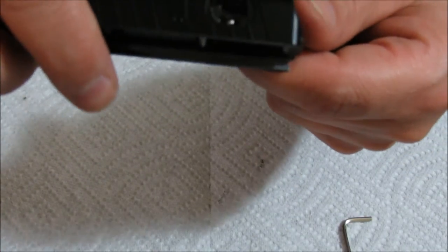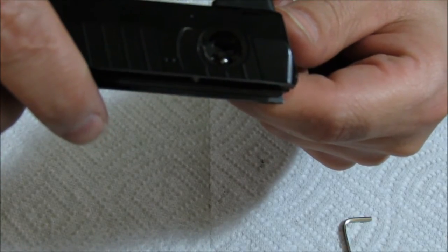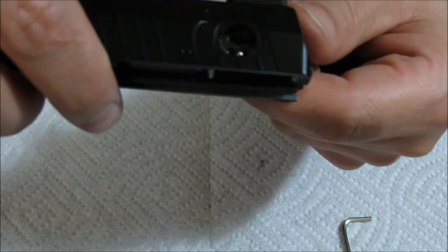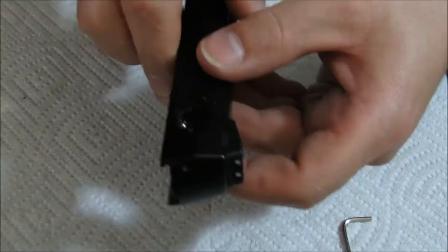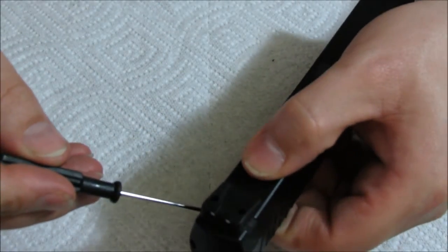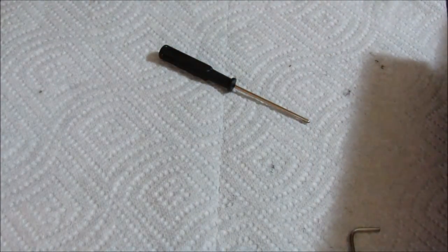Now, there is a bearing in there. This is the auto selector detent ball. Just another bearing. Set it off to the side.